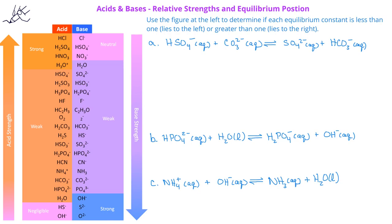Let's look at this first example. If we want to identify which direction the equilibrium is favored, we first have to identify the acids present. On the reactant side, we have HSO4⁻ and CO3²⁻. On the product side, we have SO4²⁻ and HCO3⁻.